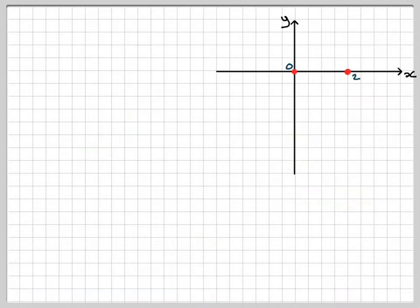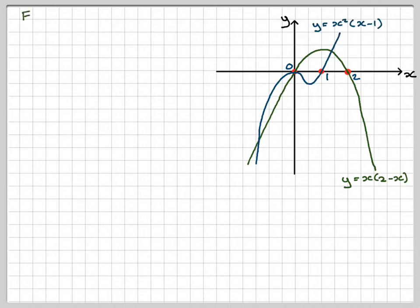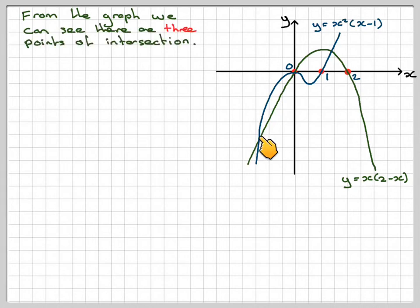From the graph, we can see that there are three points of intersection, namely here, here, and here, so I'm going to mark those points in orange. Those are the points of intersection.